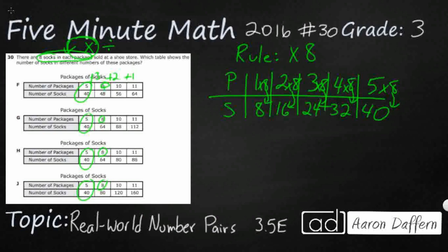So eight times eight—this is where we need to know our multiplication facts. That makes 64, not 48. So we can get rid of F. Eight times eight is 64, which means we're good on G and H, but not J. Let's get rid of J.